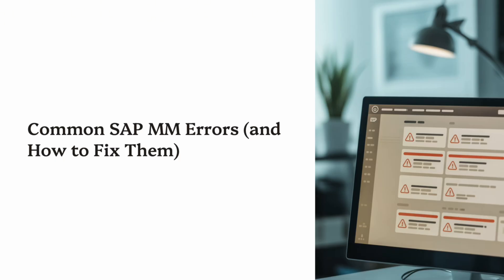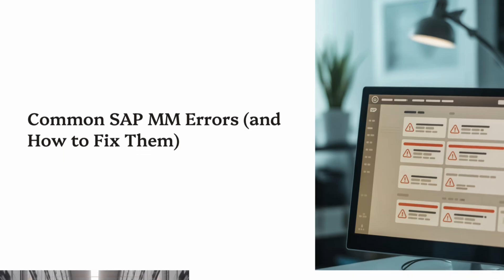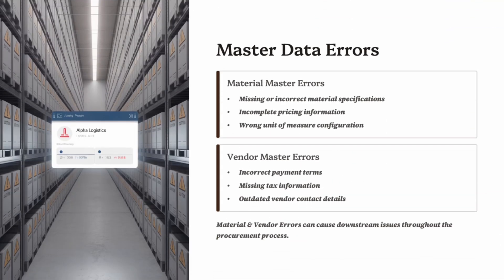Let's dive in and start with the first area where most mistakes occur: Part 1, Master Data Errors. One of the most common sources of problems in SAP MM is incorrect master data. If your material or vendor master records are wrong, every downstream process — PO, GR, invoice — will be impacted.